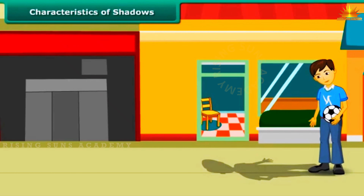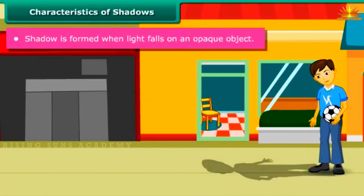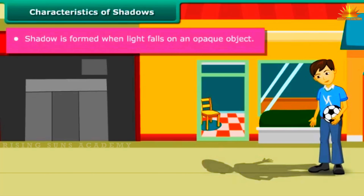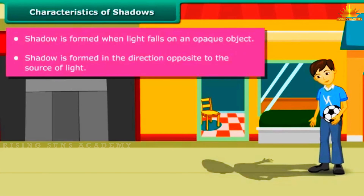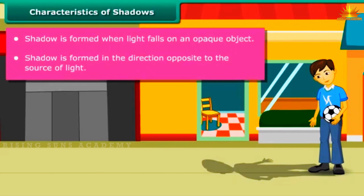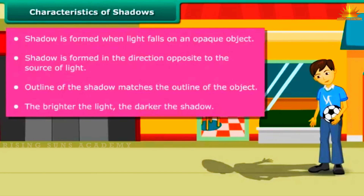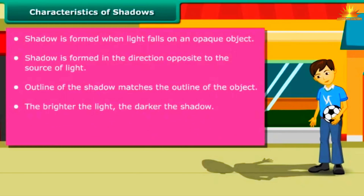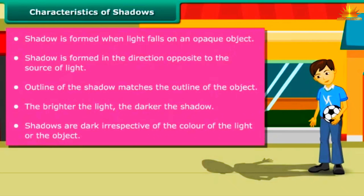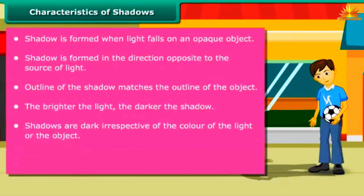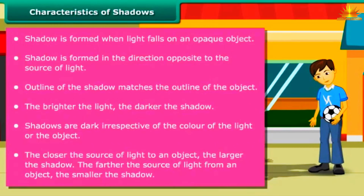You just learned some interesting facts about shadows. Shadow is formed when light falls on an opaque object. Shadow is formed in the direction opposite to the source of light. The outline of the shadow matches the outline of the object. The brighter the light, the darker the shadow. Shadows are dark irrespective of the color of the light or the object. The closer the source of light to an object, the larger the shadow. The farther the source of light from an object, the smaller the shadow.